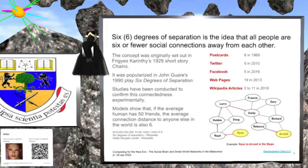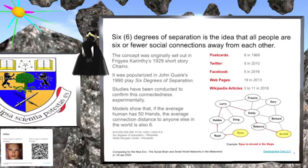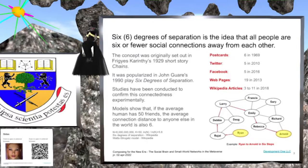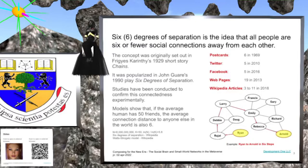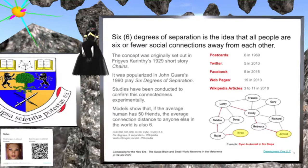Empirical studies have been conducted to confirm this connectedness experimentally. In 1969, an experiment using postcards sent by U.S. Mail confirmed an average connection distance of six. In 2010, a study using Twitter confirmed an average connection distance of five, as did a subsequent 2016 study using Facebook. The number six can also be predicted using random graph network models using appropriate parameters for populations and individual connections.